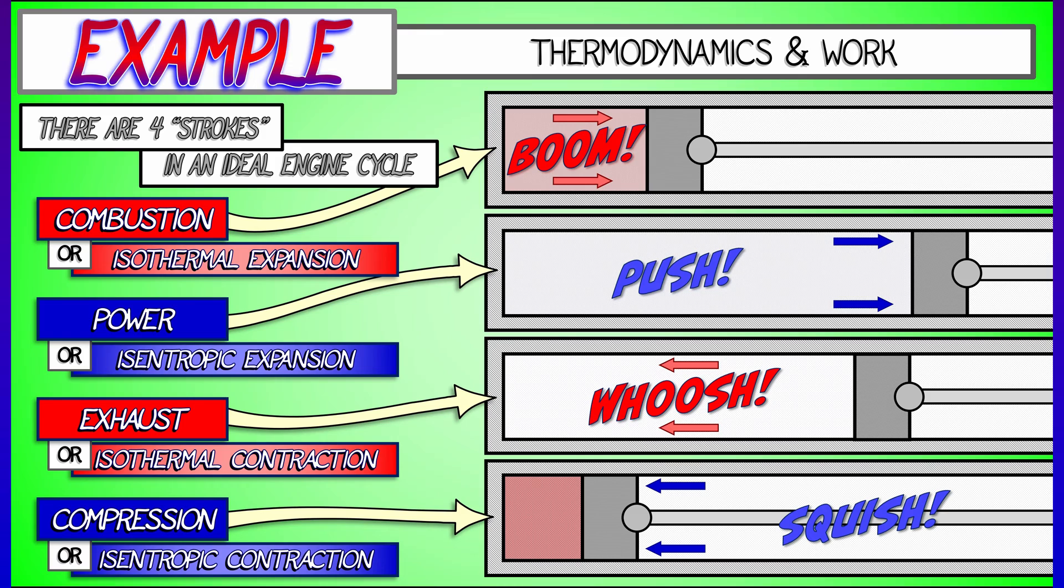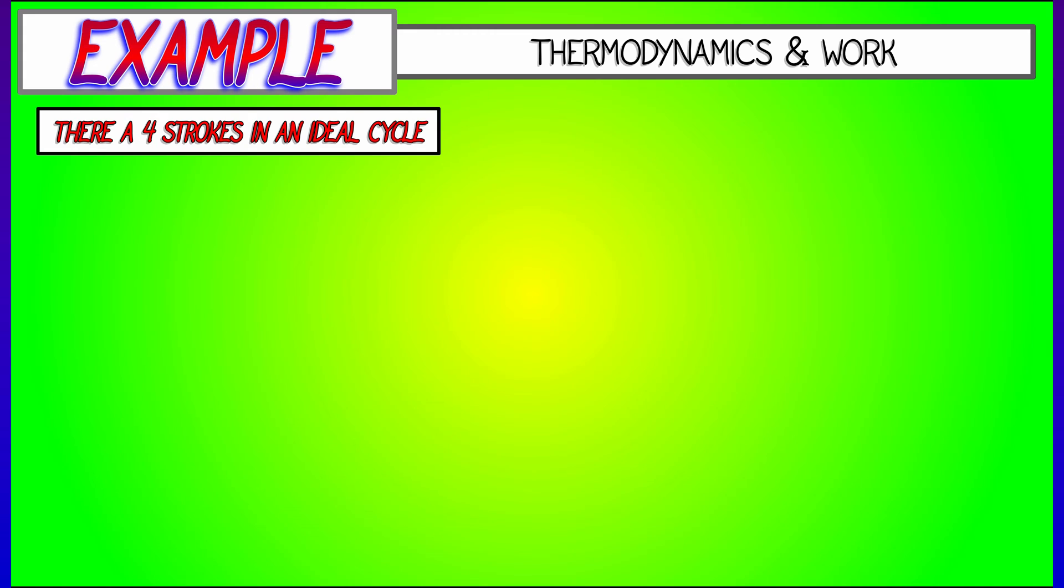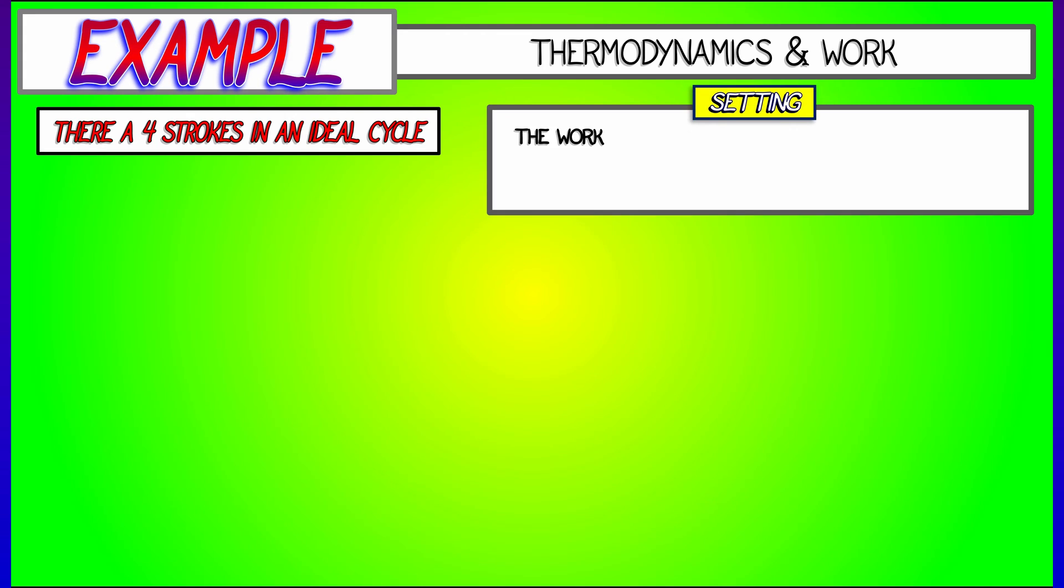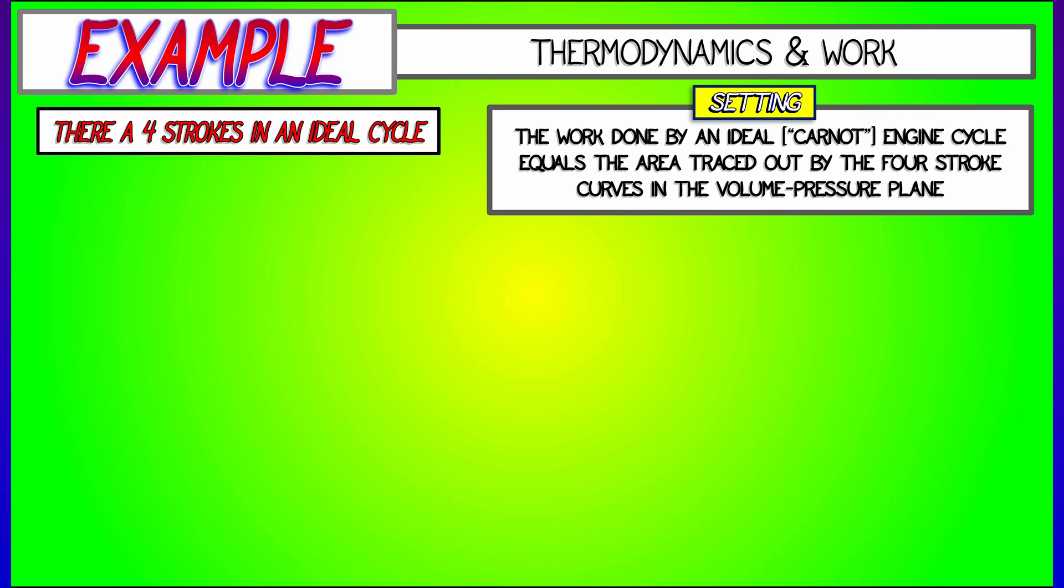And you repeat these four strokes over and over. And in an idealized engine, you get something really cool. You get that the amount of work that is done over a single cycle of the engine is equal to the area that is traced out by these four stroke curves in the PV plane, in the plane where you plot volume versus pressure.